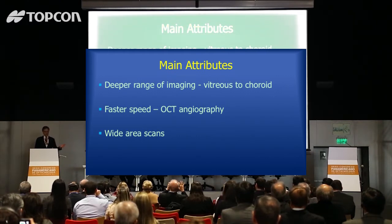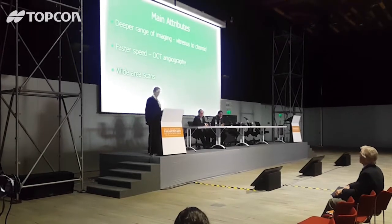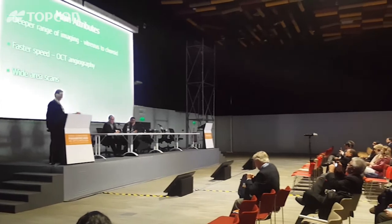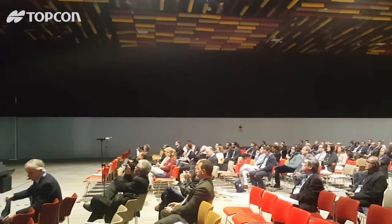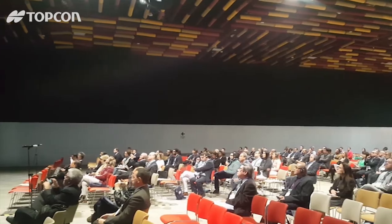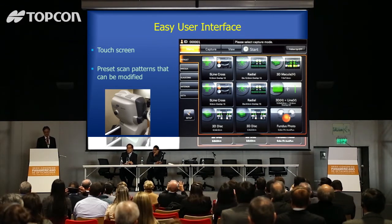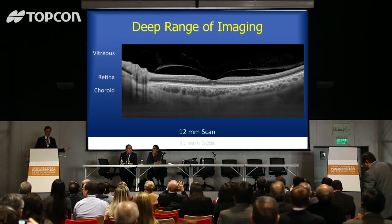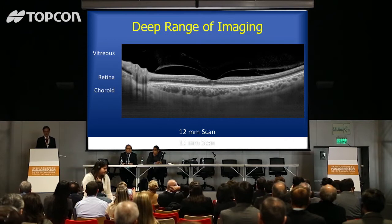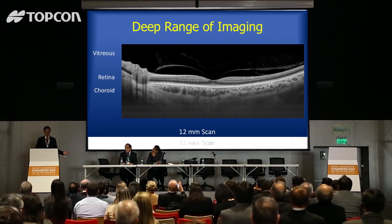That faster speed lets us scan faster, do OCT angiography better, and do wide area scans. The Topcon Triton OCT is really the first swept source OCT on the market. It's a very easy machine to use, quite efficient in patient throughput. You push pre-selected scan patterns, and the resultant image shows the vitreous, retina, and choroid all in one picture. You can see how wide the field of view is because of the very fast scan speed, covering larger areas without worrying about patient motion.